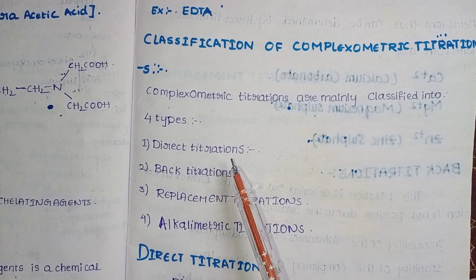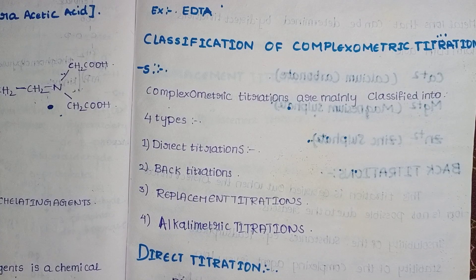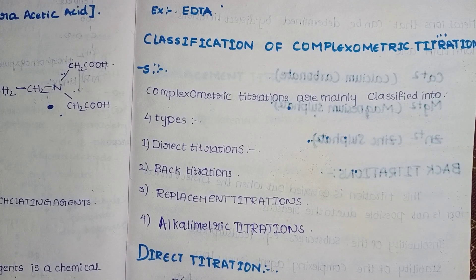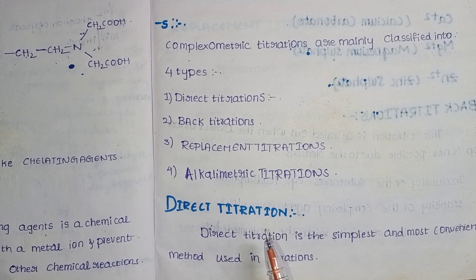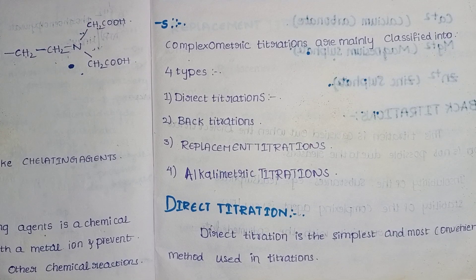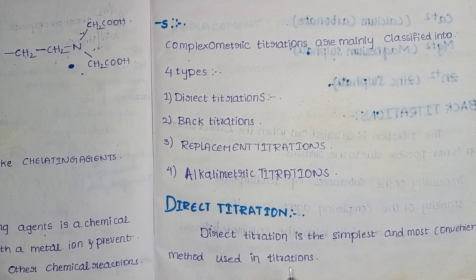The most stable and first choice is direct titrations, then back titrations, then replacement, then alkalimetric titrations. Direct titrations is the simplest and most convenient method. As much as possible, we prefer direct titrations because it is the easiest process compared to back titrations and replacement titrations.